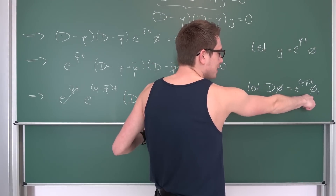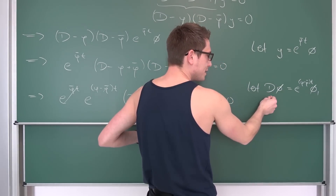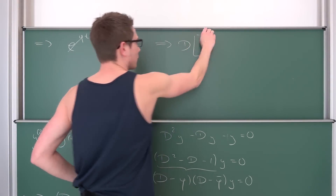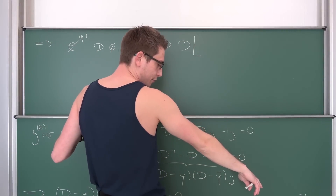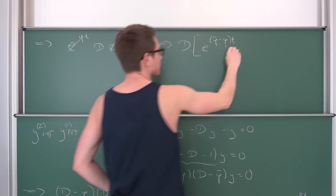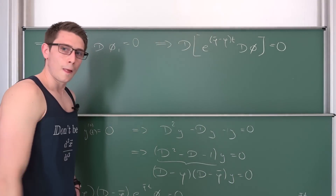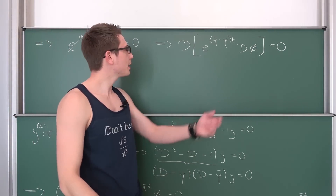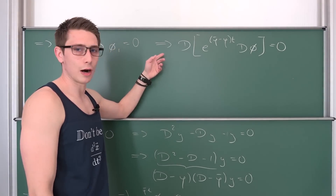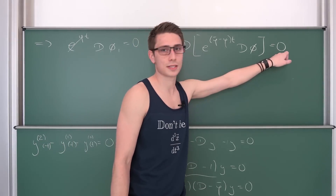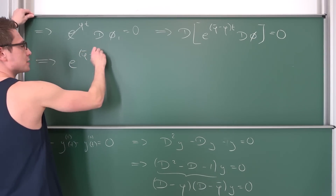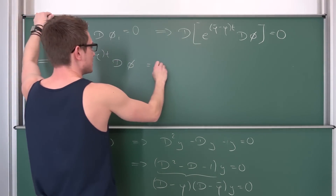Meaning overall, after resubstituting, this right here is nothing but the differential with respect to t of φ₁ — but φ₁ is e^((φ̄ minus φ)t) · Dφ — and all of this equals 0. Now we can proceed and simply integrate both sides, getting rid of this differential operator. Integration is just the inverse operation of differentiation. So integrating both sides with respect to t, we end up with some constant c₁. After integration, we have e^((φ̄ minus φ)t) · Dφ equals c₁.